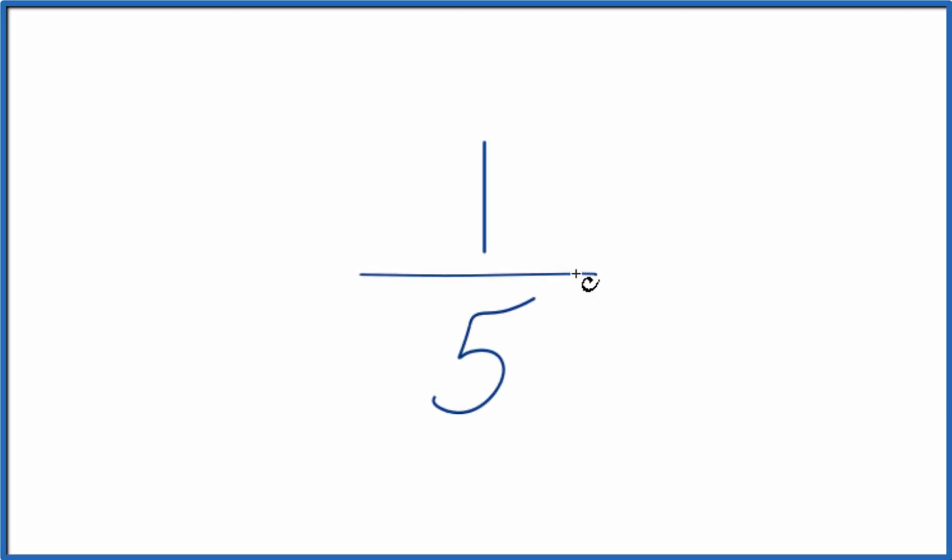Here's how you can write equivalent ratios for 1 fifth. What we're going to do is multiply the numerator and the denominator by the same number. That'll give us an equivalent ratio.